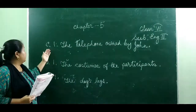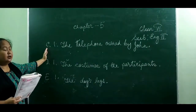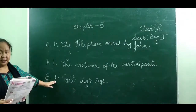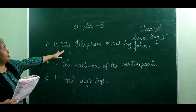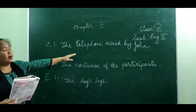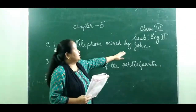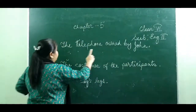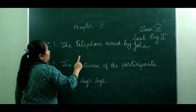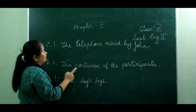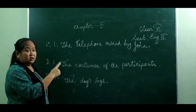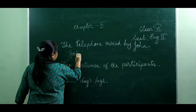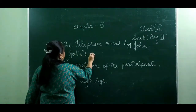Exercise D, number 1: 'The telephone owned by John.' We are going to put this noun in the possessive form. The telephone belongs to John, so we write 'John's telephone.'